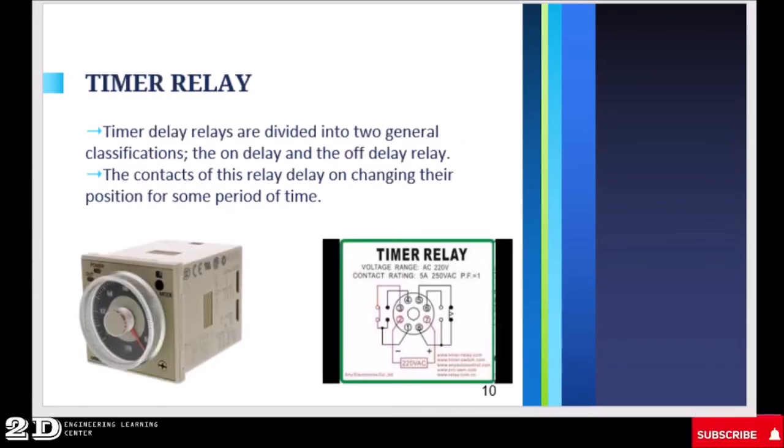Then we have the timer relay. Timer relays are divided into two general classifications: the on delay and the off delay relay. The contacts of this relay delay on changing their position for some period of time. The timer relay is basically used to delay a certain changing of state of a certain device, for example a contactor or a control relay, for a certain amount of time.